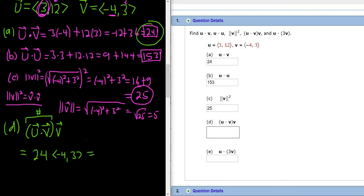So 24 times 4 is going to be 96. So this is negative 96. And then 24 times 3 is 72. So this would be the answer to part d.